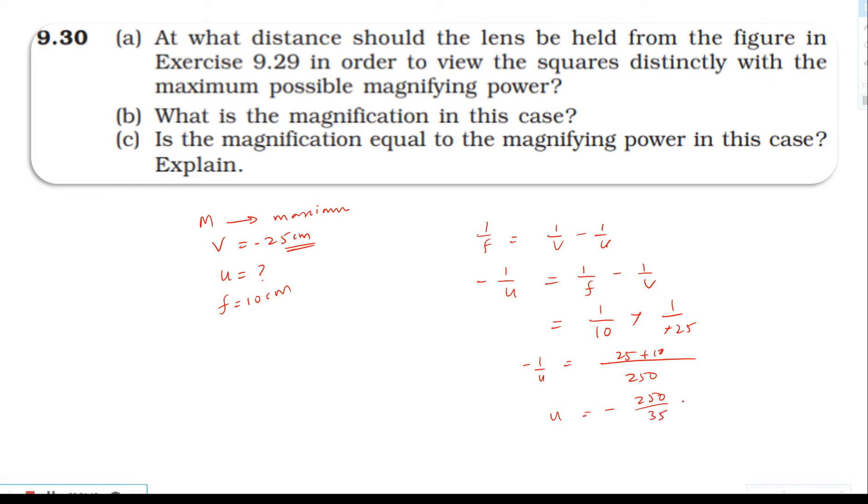For part b, the magnification equals image distance by object distance, which is minus 25 divided by minus 7.14, approximately 3.5.